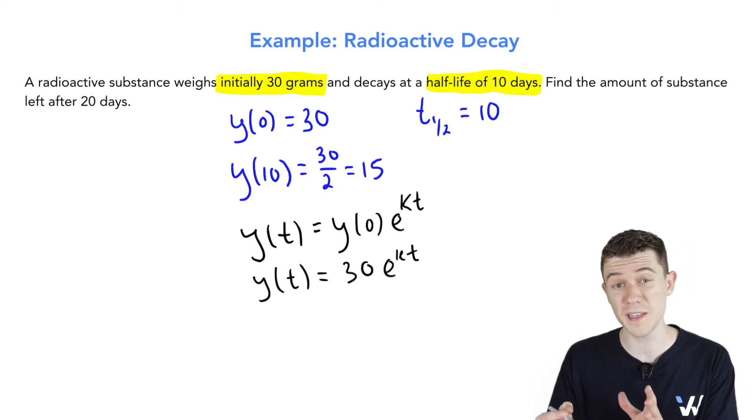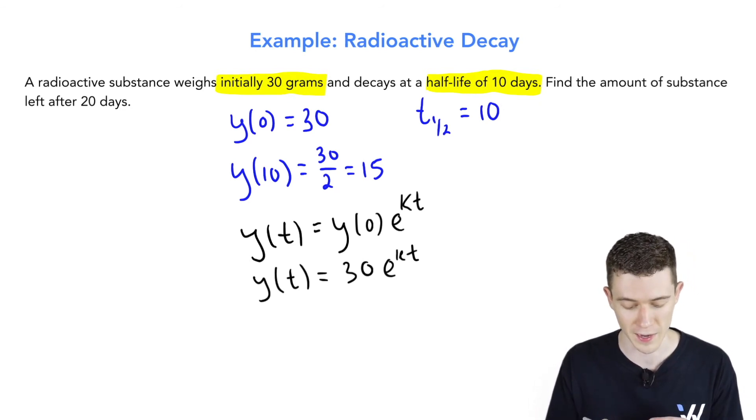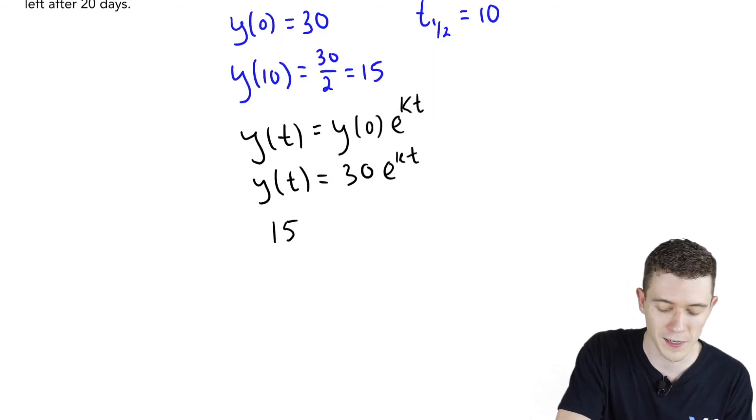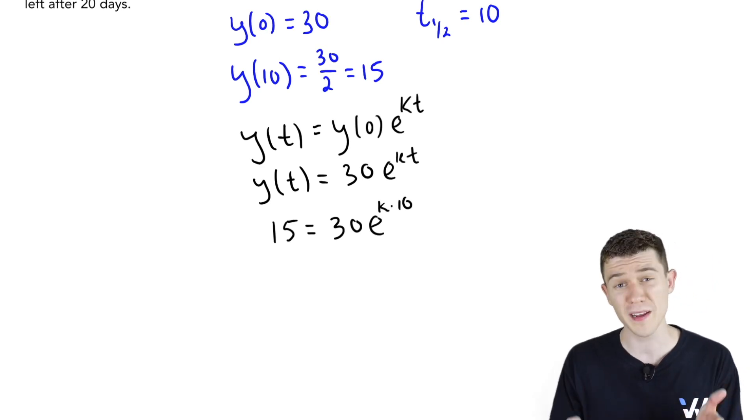We can use our other piece of information to solve for that k. y(10) = 15. We get out 15 when we plug in 10 for t. This will be e to the k times 10. Let's go ahead and solve for k.